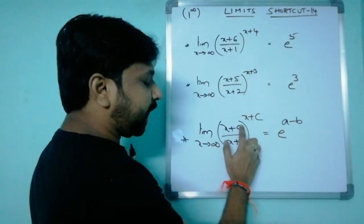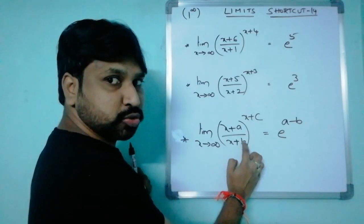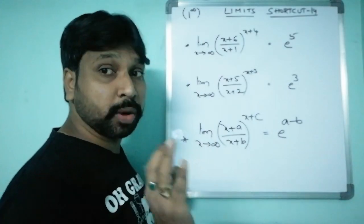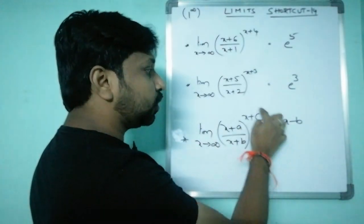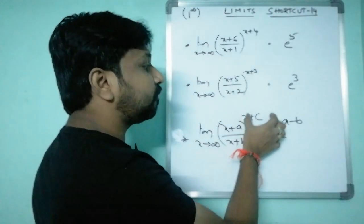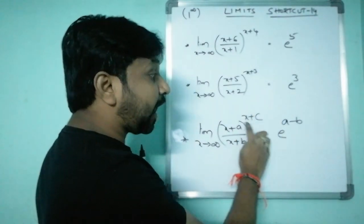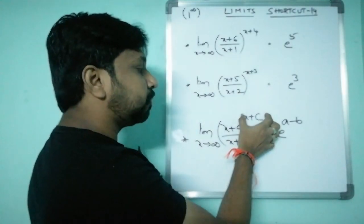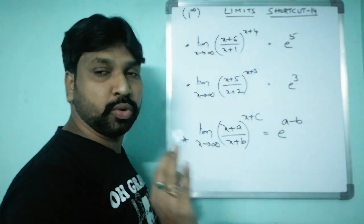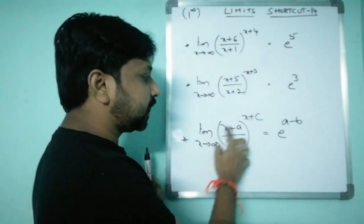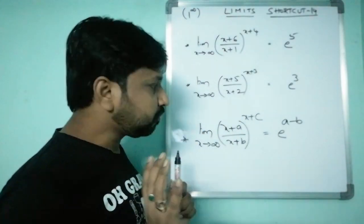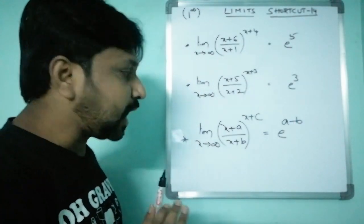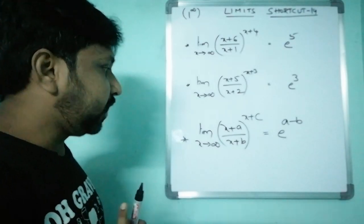Be careful: this formula applies only when both the base numerator and denominator are of the form (x + constant). It does not apply to quadratic expressions or fractional coefficients like x/2 + c/2. The x coefficient must be 1 in both numerator and denominator. Only then can you apply e^(a−b) as the shortcut.